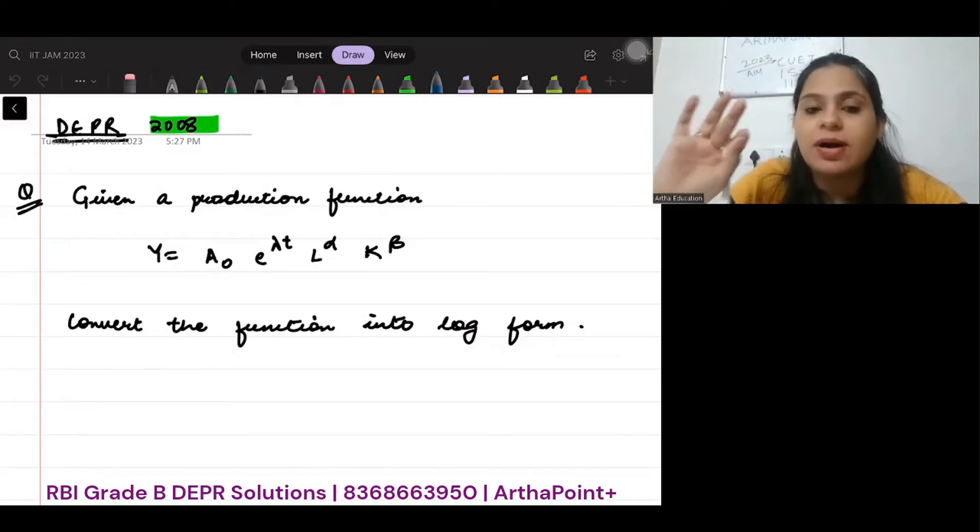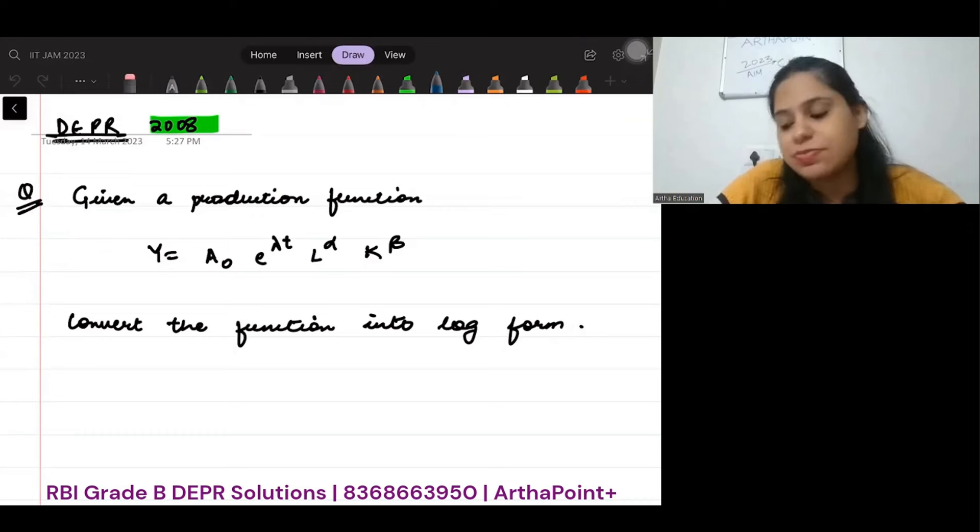Now when we talk about this exam, the salary of DEPR is very high. It starts anywhere from 75,000 to 77,000 per month and then keeps increasing. It's a government job. Therefore, it is one of the toughest exams to crack in India. It's not impossible, we know that. With practice we can clear this exam. Let's have a look at this paper question.